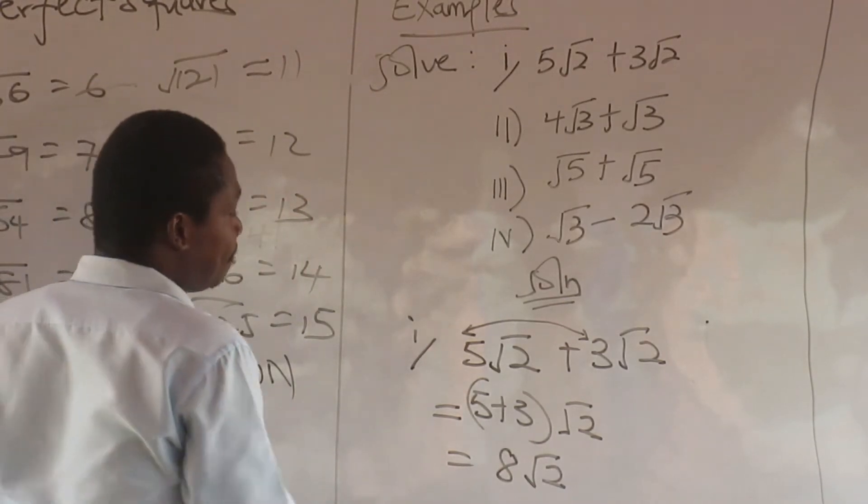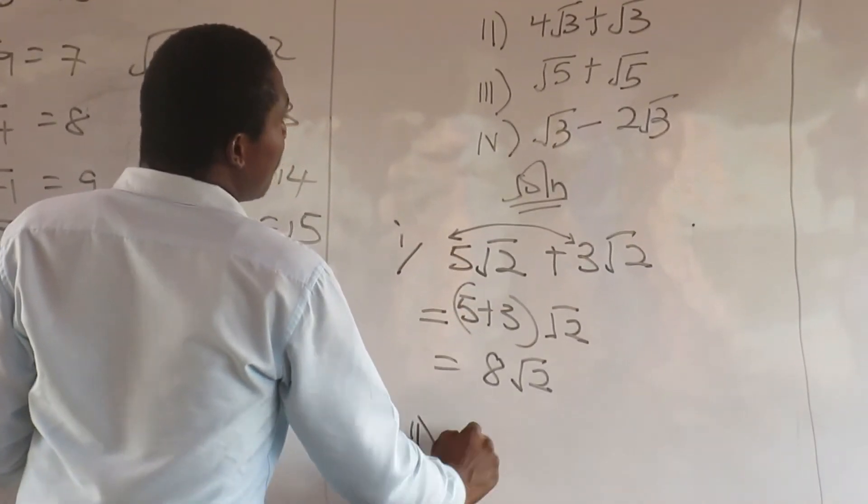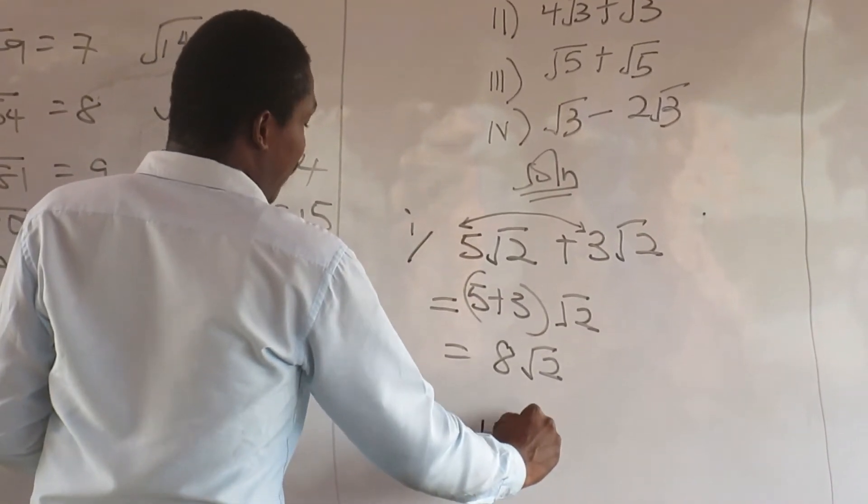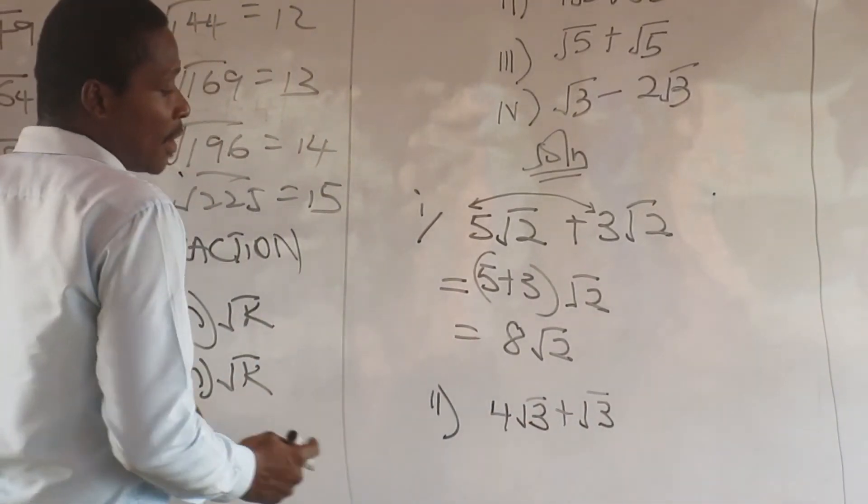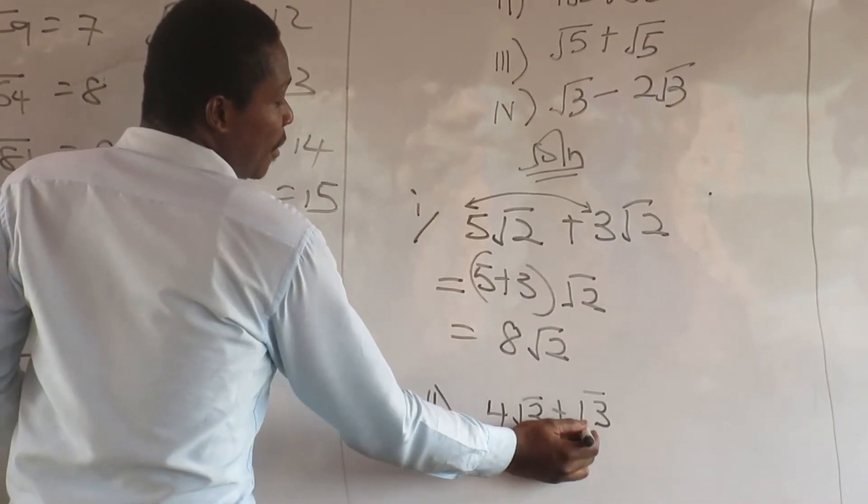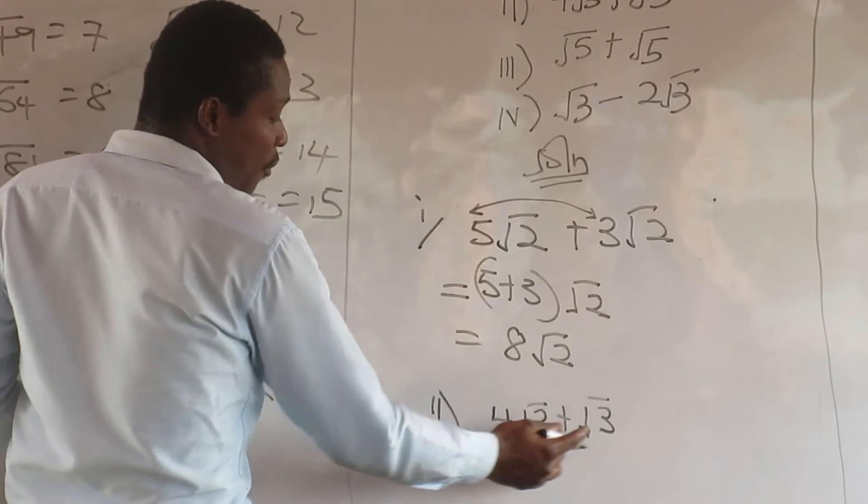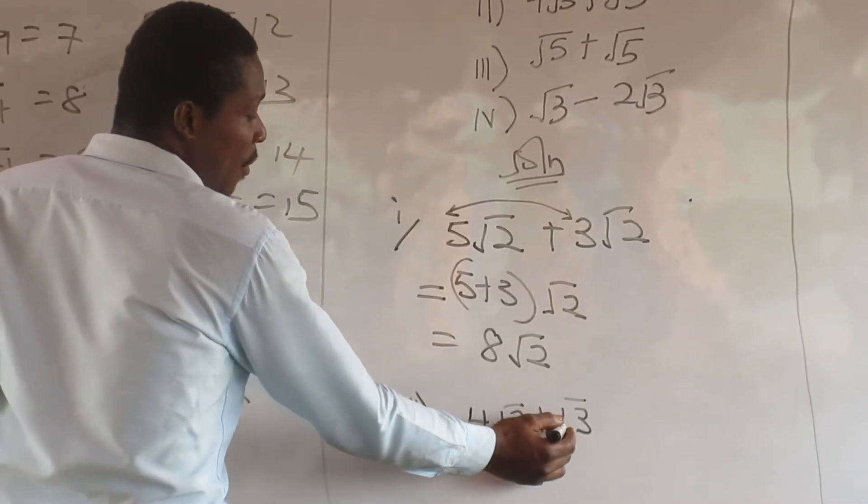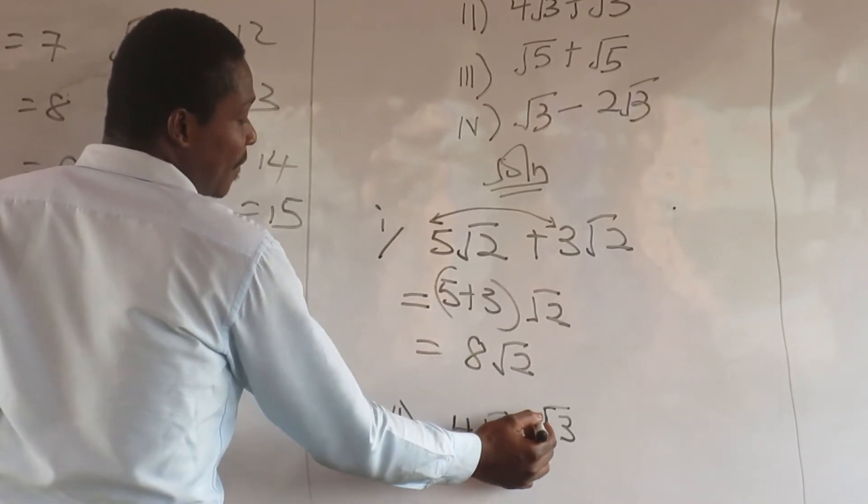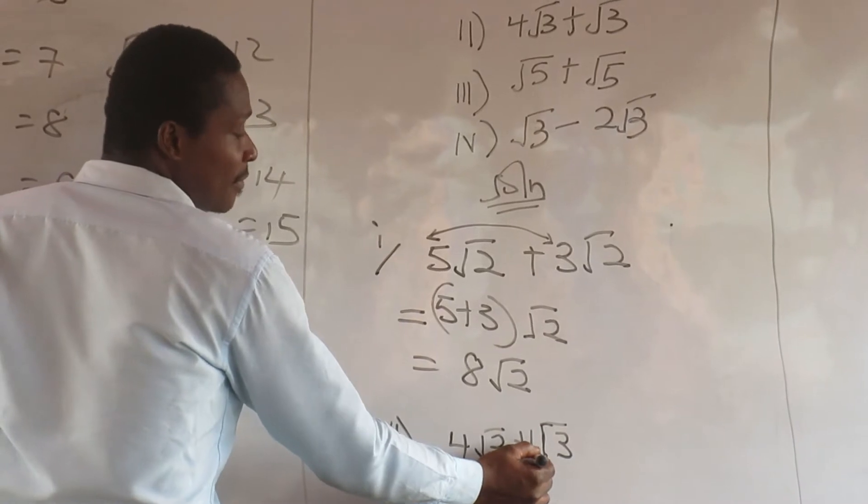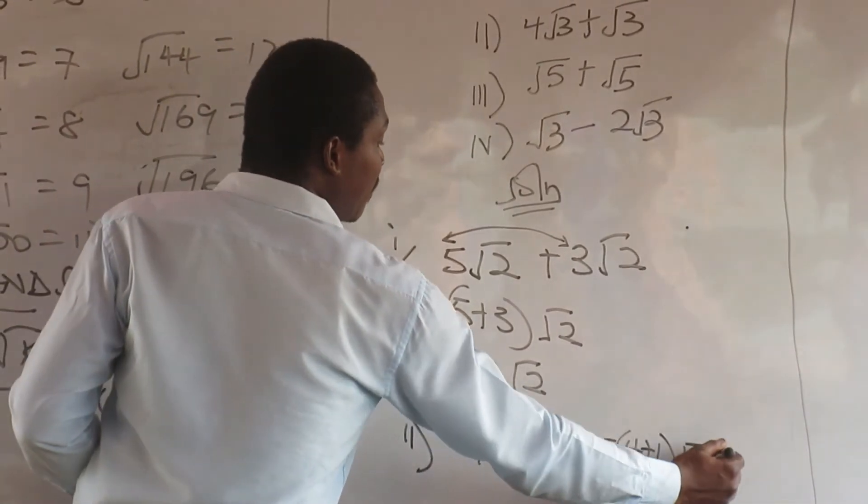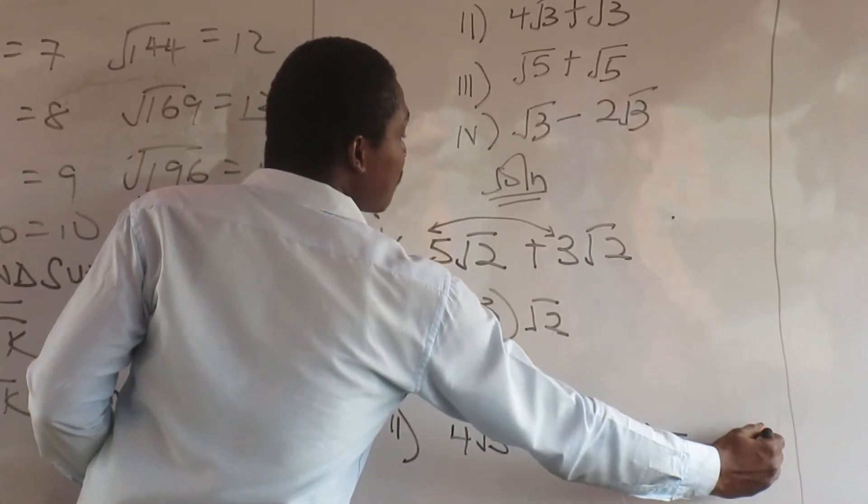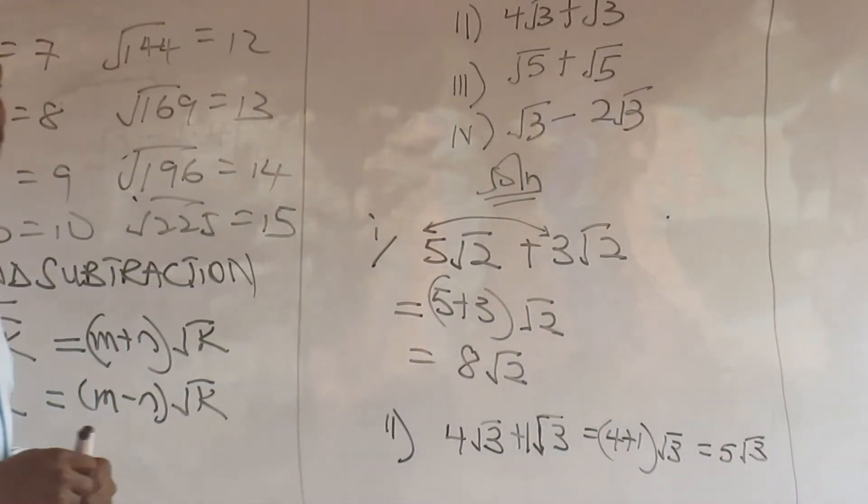Now the next one: 4 root 3 plus root 3. Now look at this question. You want to factor one. That's root 3. But there is no element outside this root here. Take note, it is 1. So this will give you 4 plus 1, 4 root 3, which will give you 5 root 3.